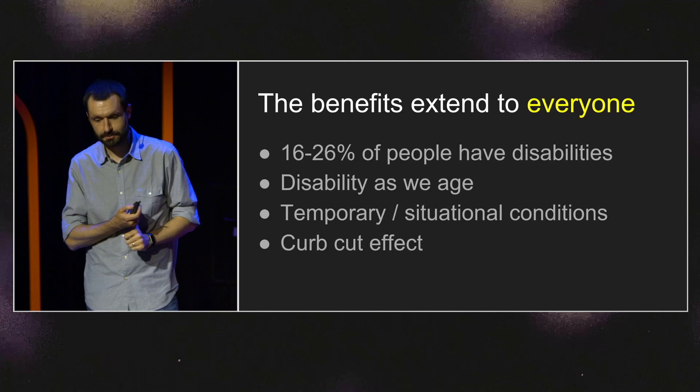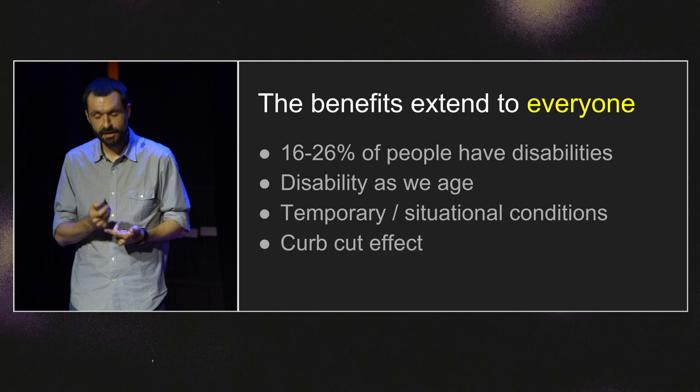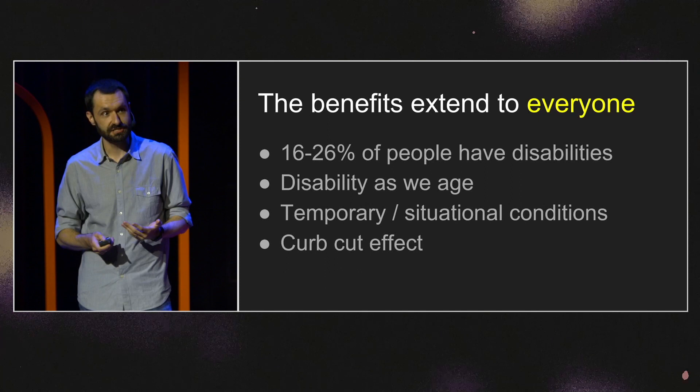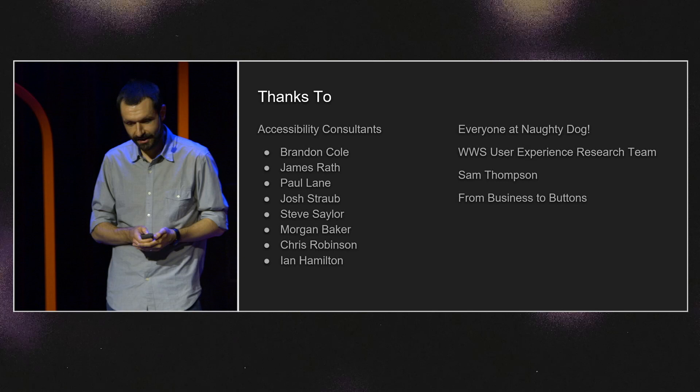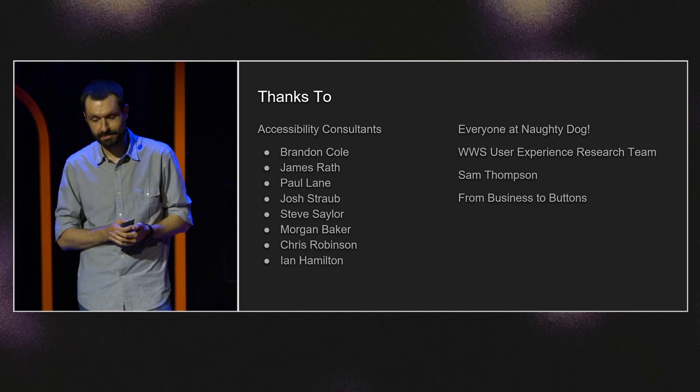The takeaway is this: accessibility benefits everyone — not only the 16% to 26% of people who have disabilities, but all of us as we face the prospect of disability with age, people in temporary or situational conditions, and through the curb cut effect. It's very difficult to anticipate all the ways your features will be used. Thank you to everyone at Naughty Dog, our amazing accessibility consultants, and to From Business to Buttons for inviting me to speak today.